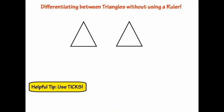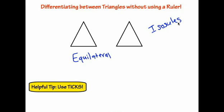The last thing we're going to talk about is using ticks to show whether a triangle is scalene, equilateral, or isosceles. I have two triangles that look exactly the same. For one of them, we want it to be an equilateral triangle. To show that each side is the same, we give each side the same number of ticks — one tick on each side. If I add another tick to one side, it's no longer equilateral, so I'll even out the ticks to make it equilateral again.